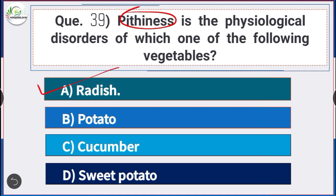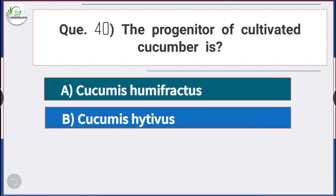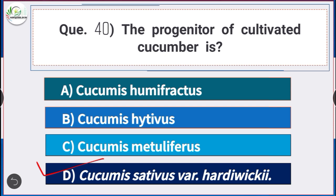Question number 40: The progenitor of cultivated cucumber is — answer option D — Cucumis sativus variety hardwickii. The progenitor of cultivated cucumber is Cucumis sativus variety hardwickii.